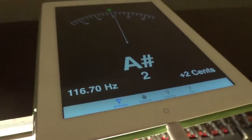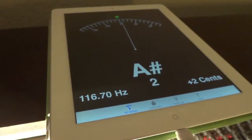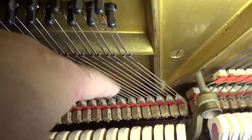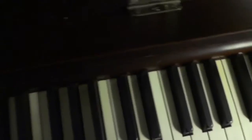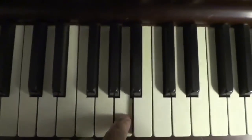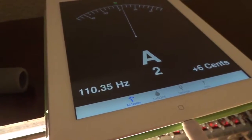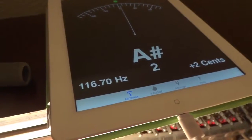Plus or minus two cents is good enough. So you take out the rubber mute, and then check the note. A2. So they are in tune.